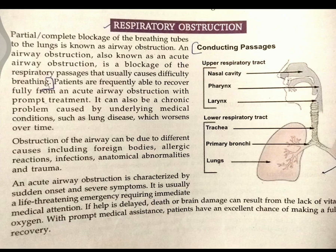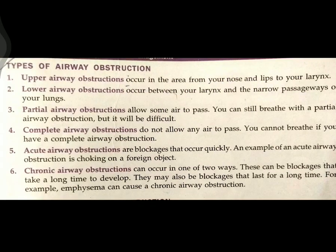Next are the types of airway obstruction. First, upper airway obstruction occurs in the area from your nose to your larynx. Lower airway obstruction occurs between your larynx and the narrow passages of your lungs. If there is a blockage below the larynx, that is lower airway obstruction.